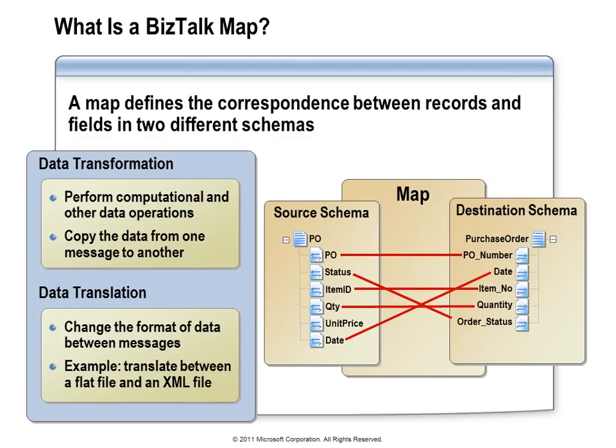The destination system might accept alphanumeric item numbers but require them in all caps, while the source system has no such requirement. So we might need to map that value and ensure all lowercase characters are converted to uppercase. Even with simple schemas, it may not be as simple as just copying values from left to right. Fortunately, the BizTalk mapper makes it very easy to handle any of those conversions.